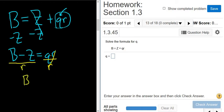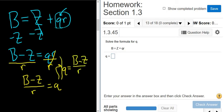So we're left with big B minus big Z over little r equals little q. And that's the final answer. You can leave it like this if you like, or we can rewrite it and put the little q on the left, and the other stuff on the right-hand side. And so that would be the final answer.